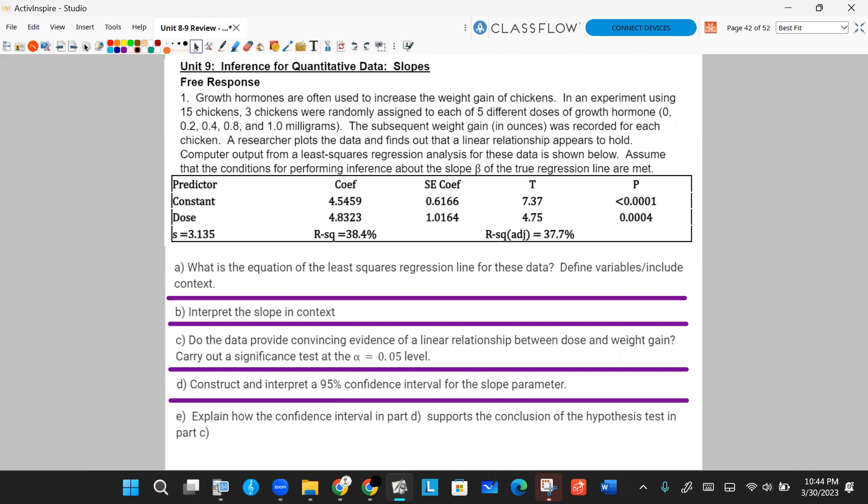The subsequent weight gain in ounces was recorded for each chicken. A researcher plots the data and finds out that a linear relationship appears to hold. Computer output from the least squares regression analysis for these data is shown below. Assume that the conditions for performing inference about the slope β of the true regression line are met.